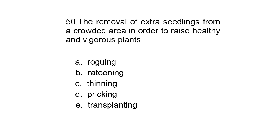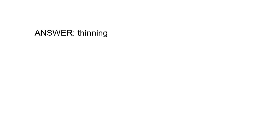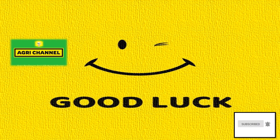Last question. The removal of extra seedlings from a crowded area in order to raise healthy and vigorous plants: A. Rogueing, B. Ratooning, C. Thinning, D. Pricking, or E. Transplanting. Correct answer is C, Thinning.